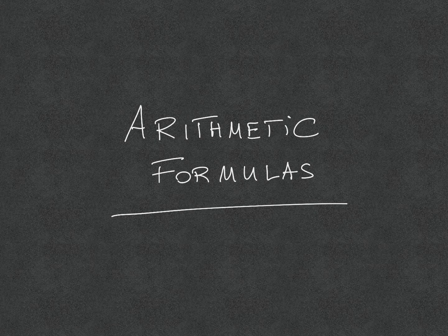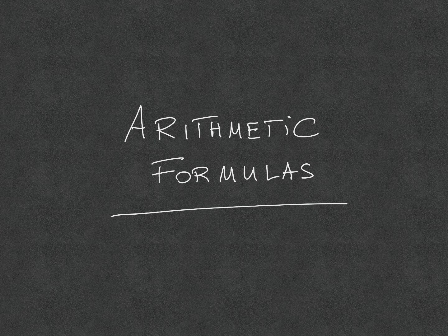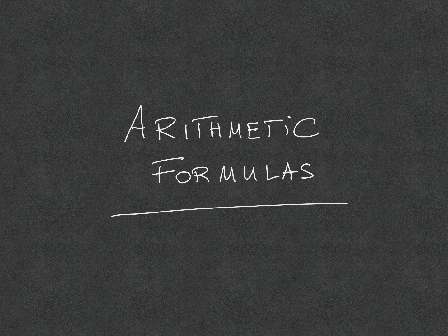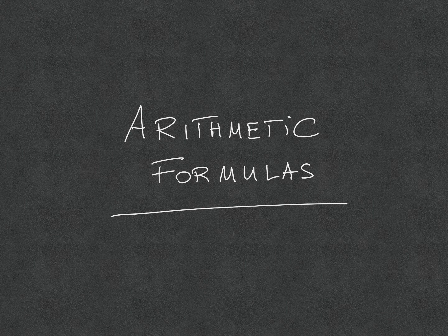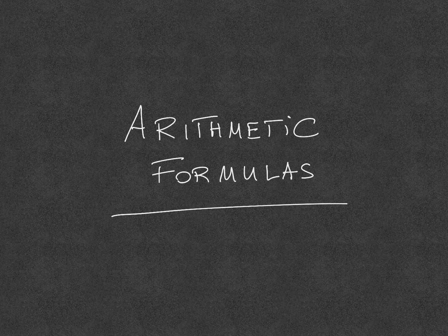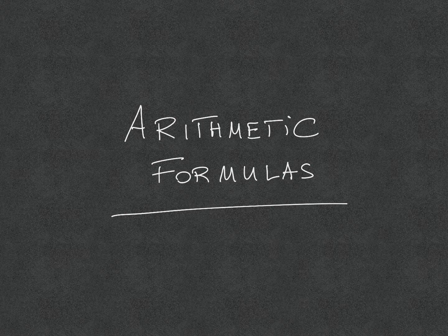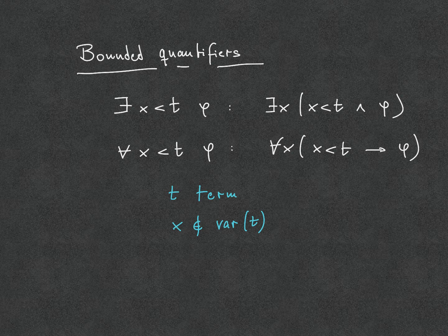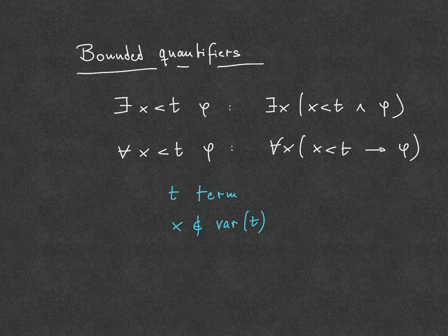We continue the lectures about Peano arithmetic with a segment about arithmetic formulas. The main goal of this lecture is to show that while PA0 or Q is a rather weak theory, it can still capture to some extent truth about the natural numbers. To describe the kind of truth that Q can capture about n, we need the notion of a bounded quantifier.